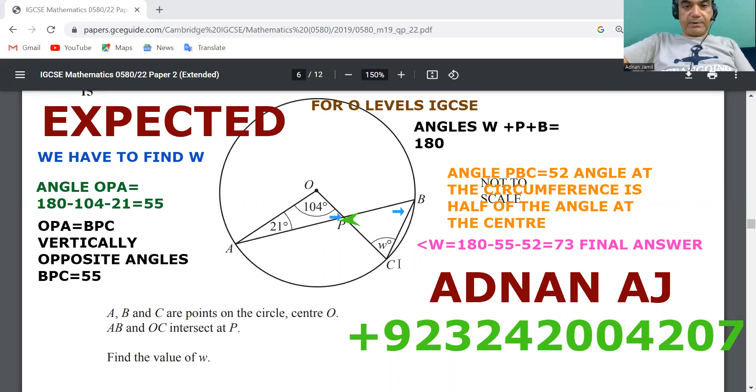In this question, if we analyze, we can see that there are certain things which are given. For example, if I look at this angle over here which is shown by the blue arrow.